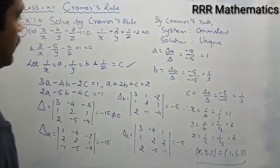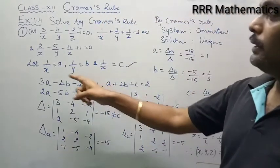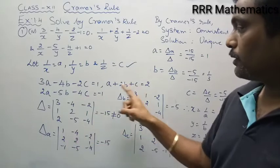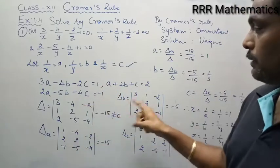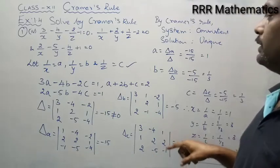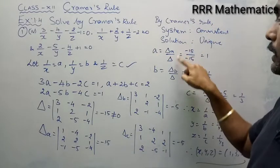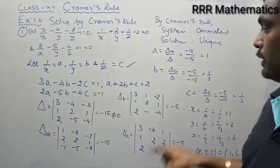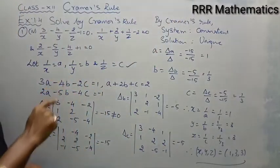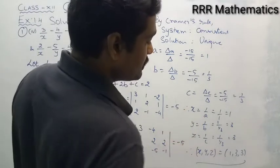Very simple. We assumed 1/x = a, 1/y = b, 1/z = c, so we get linear equations in terms of a, b, c. We find Delta — the coefficient determinant — then Delta_a by replacing the first column, Delta_b by replacing the second column, and Delta_c by replacing the third column with constant values 1, 2, minus 1. Since Delta ≠ 0, we apply Cramer's rule to get a, b, c, then take reciprocals to get x = 1, y = 3, z = 3.